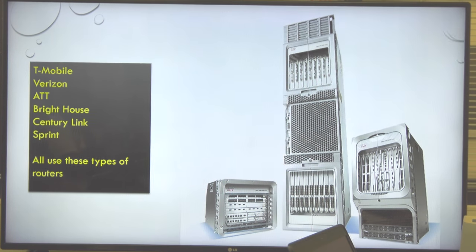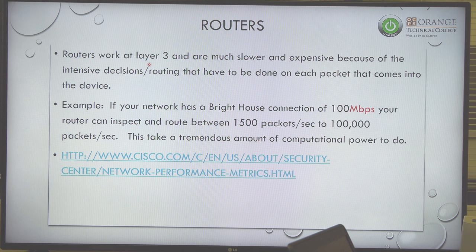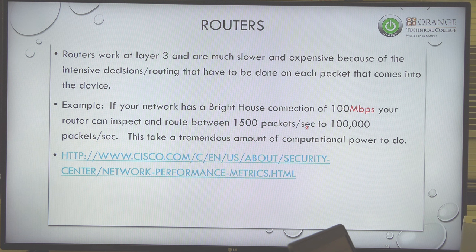For the exam, you need to know that routers work at Layer 3. Technically routers work at Layer 1, Layer 2, and Layer 3, but the answer to exam questions is Layer 3. Routers are slower and more expensive because of the routing decisions that have to be made. For example, a 100 Mbps home connection requires your router to inspect and route between 15,000 and 100,000 packets per second — that takes tremendous computational power.